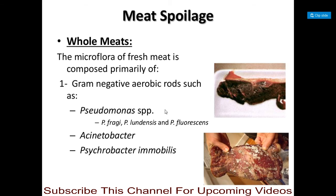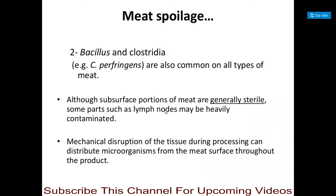Other organisms include Acinetobacter and Psychrobacter immobilis, Bacillus, and Clostridium — with Clostridium perfringens being most common on all types of meat. The subsurface portions of meat are generally sterile, but some parts such as lymph nodes are heavily contaminated. Mechanical disruption of these tissues during processing can distribute microorganisms from the meat surface throughout the meat product.